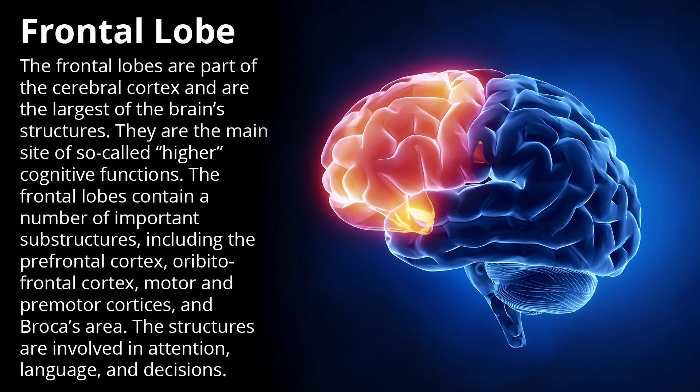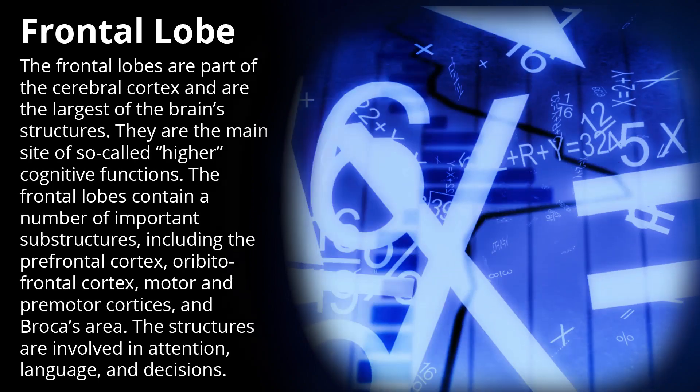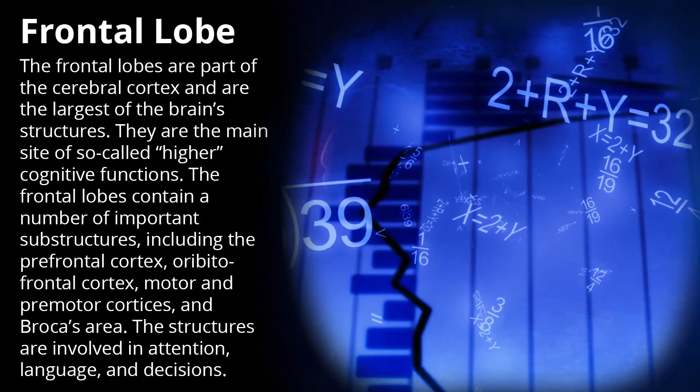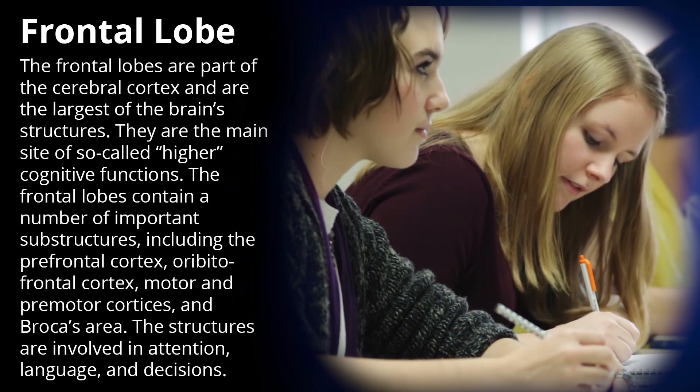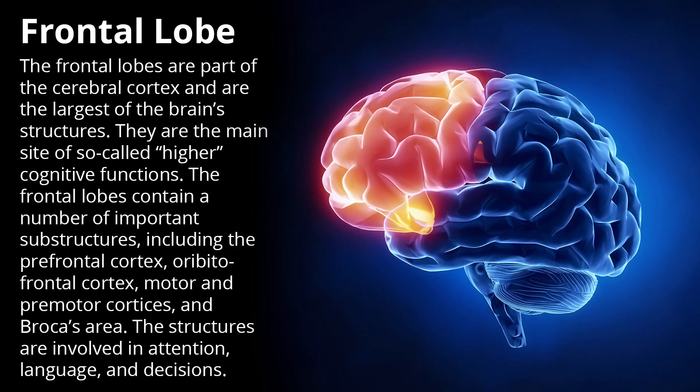The frontal lobes are part of the cerebral cortex and are the largest of the brain structures. They are the main site of the so-called higher cognitive functions. The frontal lobes contain a number of important substructures.